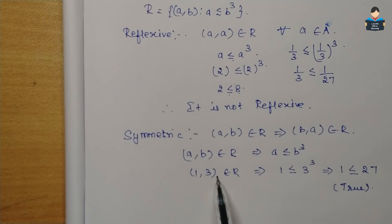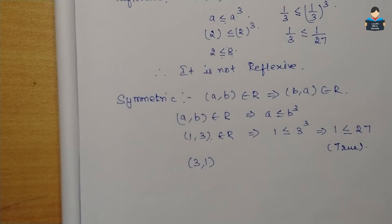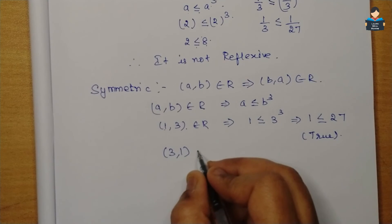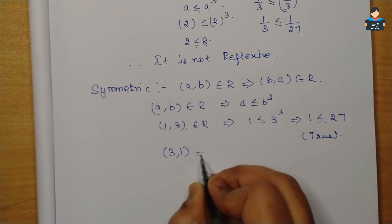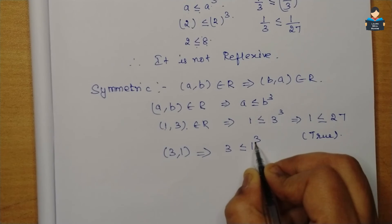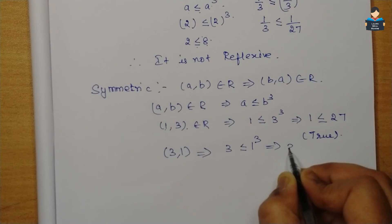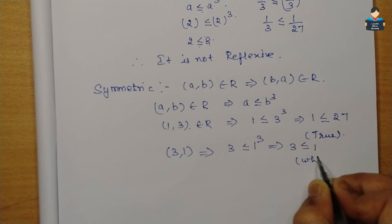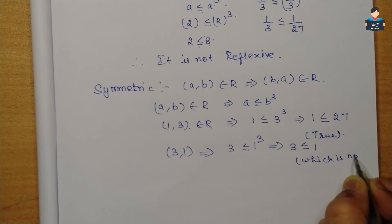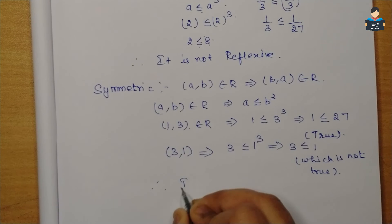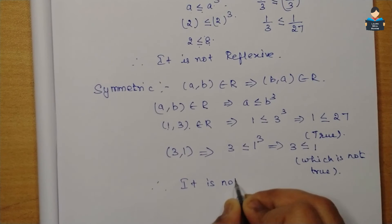Now check (3,1): 3 is less than or equal to 1³, that is 3 ≤ 1, which is not true. Therefore, it is not symmetric.